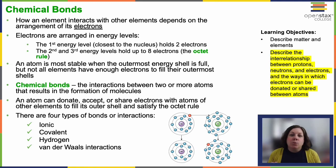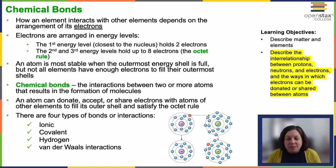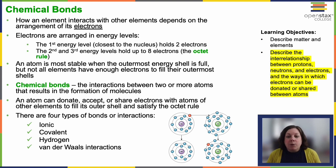Let's jump into how chemical bonding works. How an element interacts with other elements is going to depend on the arrangement of its electrons. In the previous few slides, we talked more about the impact of protons and neutrons, but now we're going to focus in on the electrons.